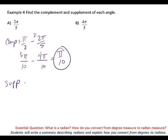My supplementary angle — what am I supposed to subtract from? π. Good. And I'm subtracting 2π over 5. Can't I just write 5 over 5? So, 5π over 5 minus 2π over 5 is what? 3π over 5 would be the supplementary angle.